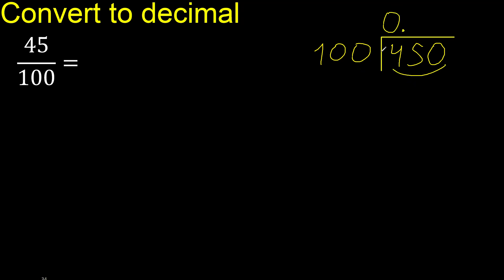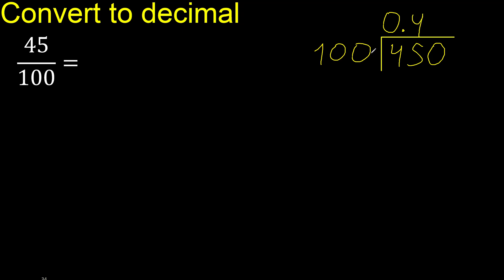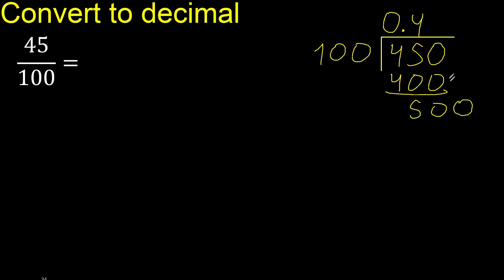450 is not less than 100. Multiply by which number is nearest to this number but not greater: multiply by 5 is 500, which is greater; multiply by 4 is 400. Subtract — 50. There is no number that goes down, therefore complete — always complete with 0.